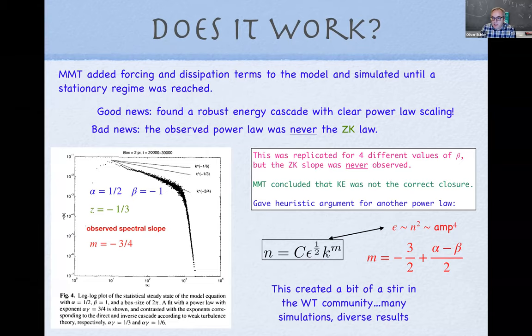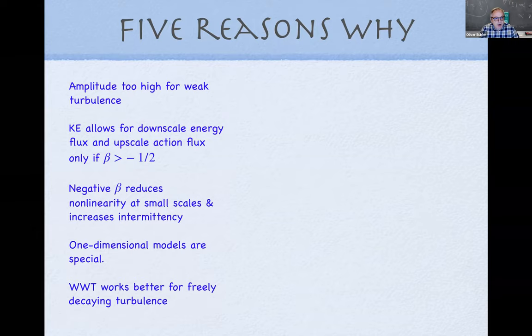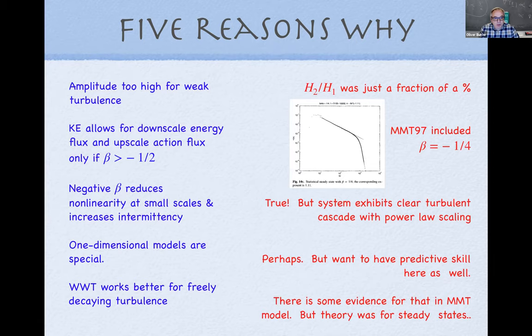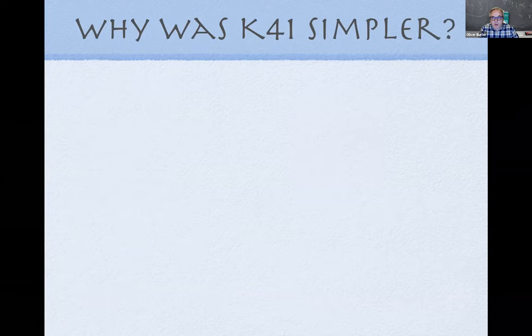The 1997 conclusion was that maybe the kinetic equation is not the correct closure. They proposed a heuristic argument for a different power law — replacing ε^(1/3) with ε^(1/2) and with a coefficient m involving α — which fit their data quite well. This created a stir, and subsequent simulations offered various rationalizations: amplitudes might be too high, there might be restrictions on β, intermittency effects, or 1D models might behave differently. Many counter-arguments were raised and the situation remained open.